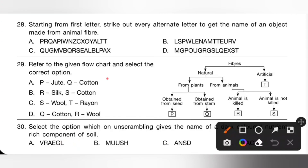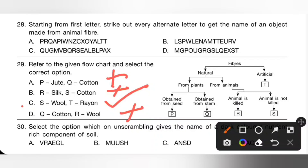Checking the options: Option A — P jute, Q cotton — incorrect because P is from seed (cotton), not jute. Option B — R silk, S cotton — incorrect because S is wool. Option C — S wool (correct) and T rayon (correct, artificial fiber). Option D — Q cotton — incorrect because cotton is obtained from seed, not as labeled. So option C is the correct answer.